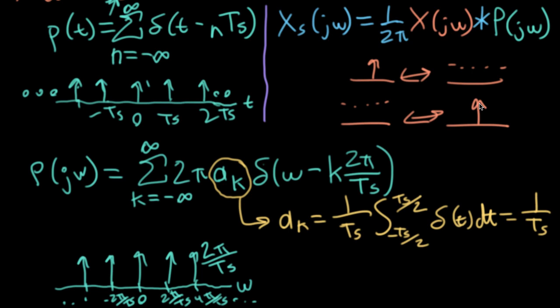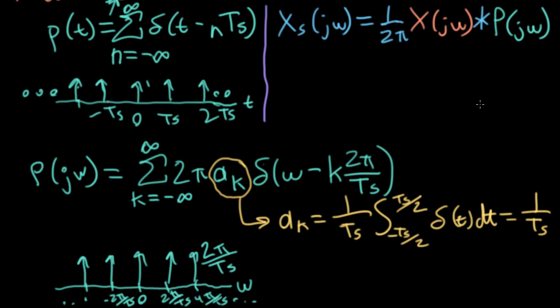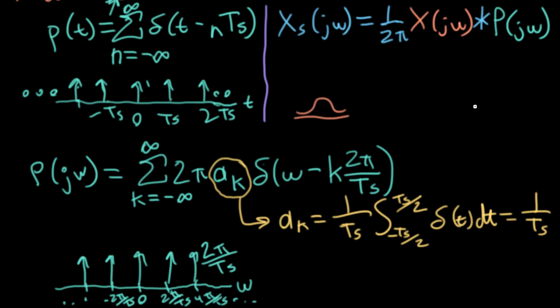It would be hard-pressed to come up with two functions more conceptually different than a constant and a delta function. But it's fairly rare to find functions where the Fourier transform has the same overall mathematical form as the time domain function. Things like Gaussian bell shapes do transform into Gaussian bell shapes, but there's not a lot of these. So that's kind of neat.